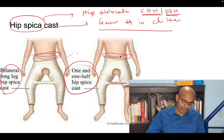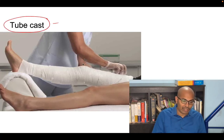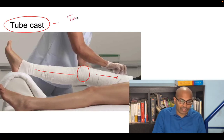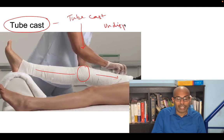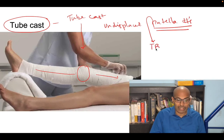The tube cast is applied across the knee joint in almost full extension. It is most commonly used for undisplaced patella fractures. If the patella fracture is displaced, the treatment of choice is tension band wiring — not a cast.